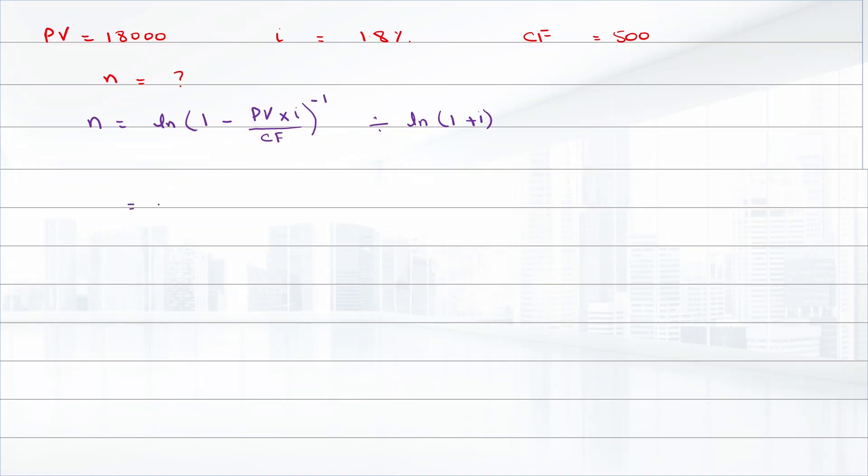So log of 1 minus 18,000 multiplied by 0.018 divided by 500, raised to power minus 1, divided by log of 1 plus 0.018.